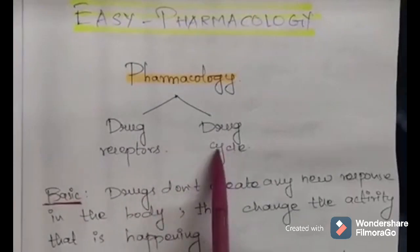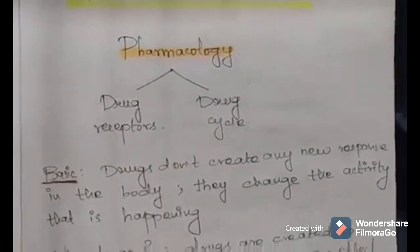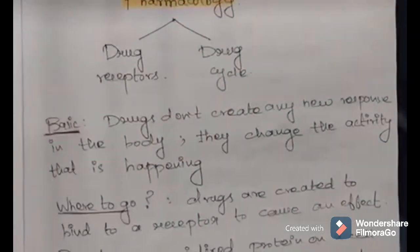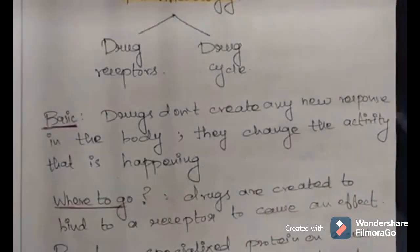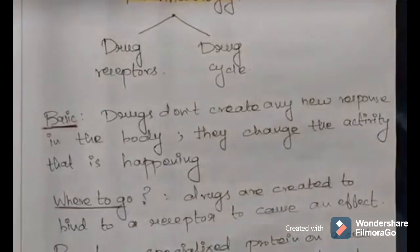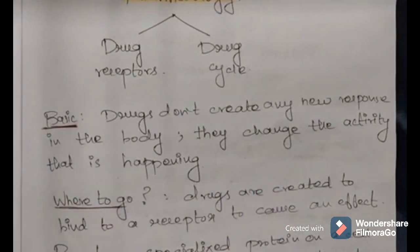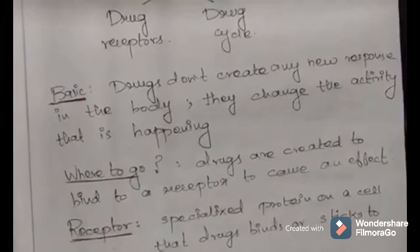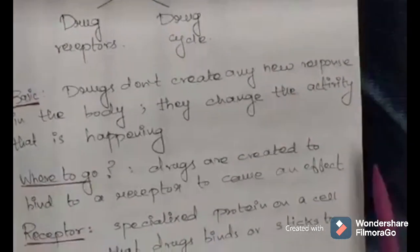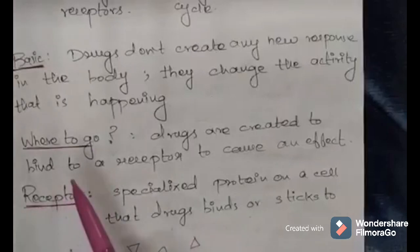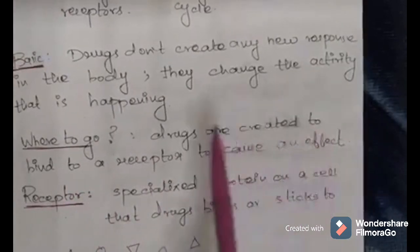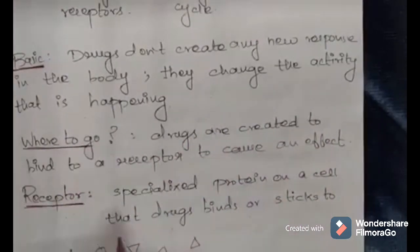Basically, drugs don't create any new response in the body — they don't produce anything new inside the body. They just change the activity that is already happening in the body. Drugs are created to bind to a receptor to cause an effect, so the drug directly binds to the receptor and then produces the effect.